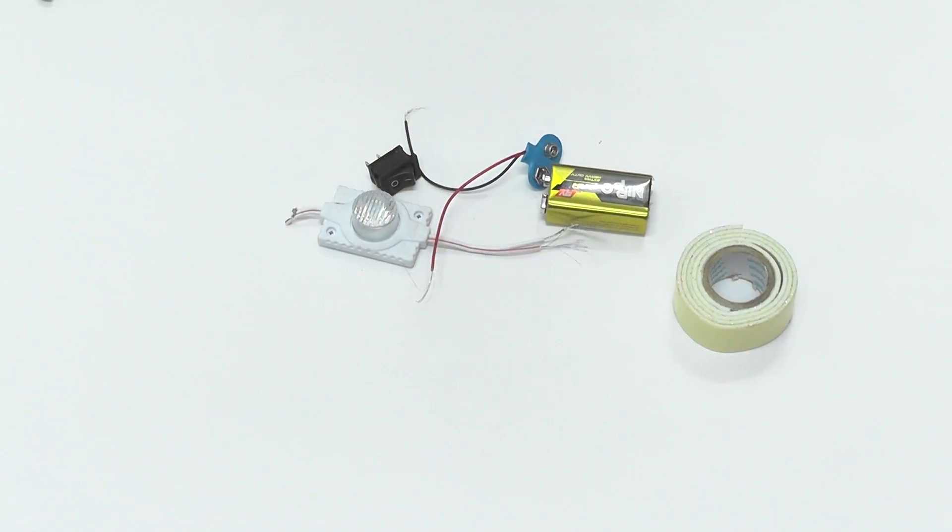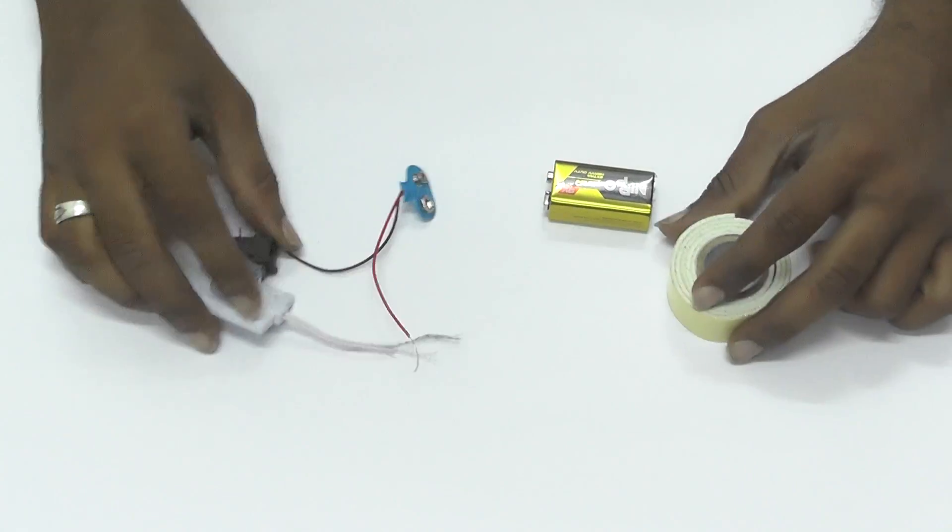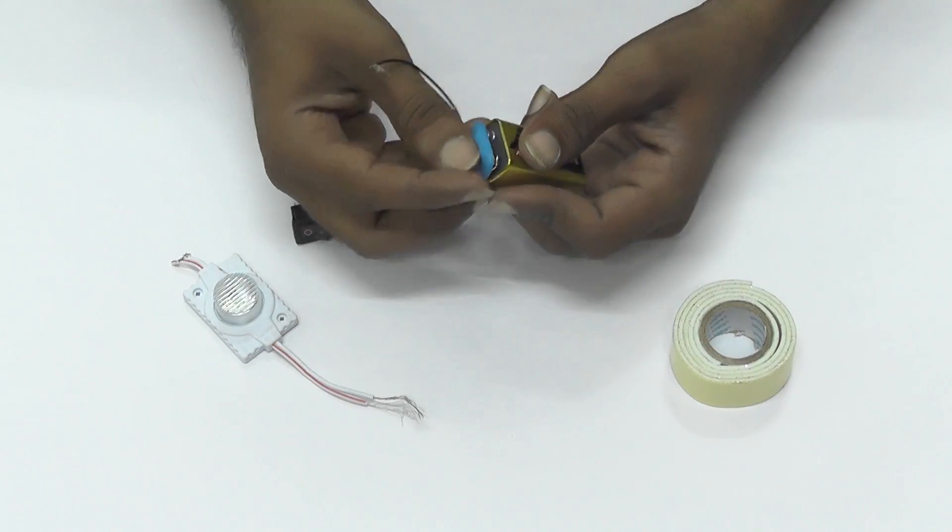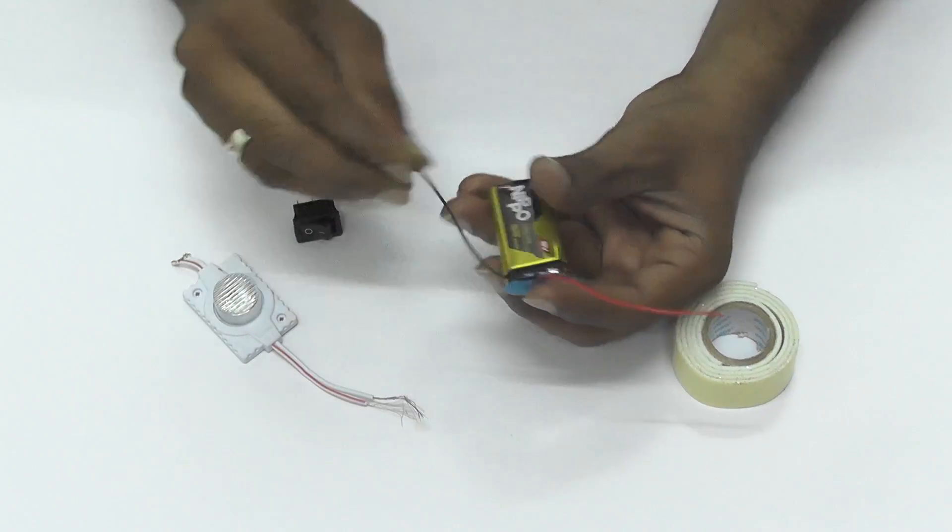How do we talk about the battery? How do we talk about LED light? One battery, one switch, connector and LED light, and double-sided tape.